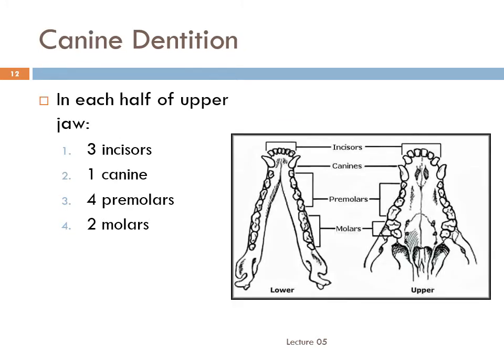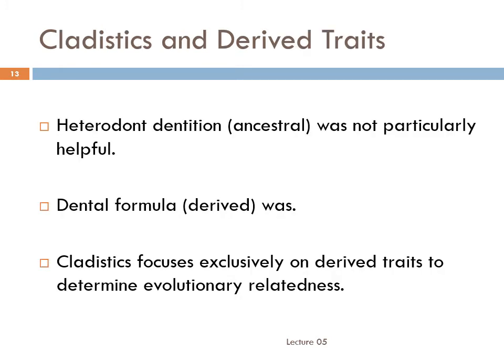In the upper jaws of dogs, dogs have 3-1-4-2. So humans and baboons share the derived trait as well as the ancestral trait. Dogs share the ancestral trait, but not the derived trait. So we're more closely related to baboons than we are to dogs. In this case, heterodont dentition is the ancestral trait and it wasn't particularly helpful. The dental formula is the derived trait, and it was helpful. Cladistics focuses exclusively on derived traits to determine evolutionary relatedness.